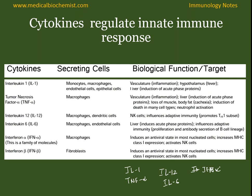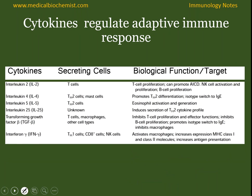Interleukin-1 is secreted by monocytes and helps in inflammation and induces fever. Similarly, there are other cytokines in the table that act in various inflammatory and innate immune response processes. The cytokines that regulate adaptive immune response include: interleukin-2, which activates T cell proliferation; interleukin-4, which promotes TH2 differentiation; interleukin-5 for eosinophil activation; TGF-beta, which inhibits T cell proliferation; and interferon gamma, which activates the TH1 type response.